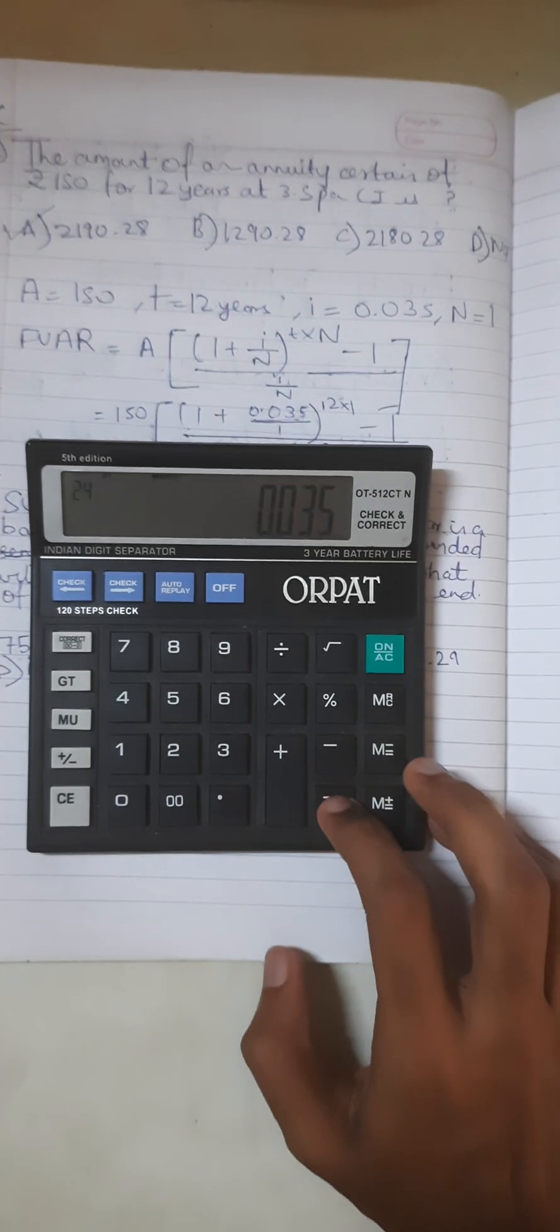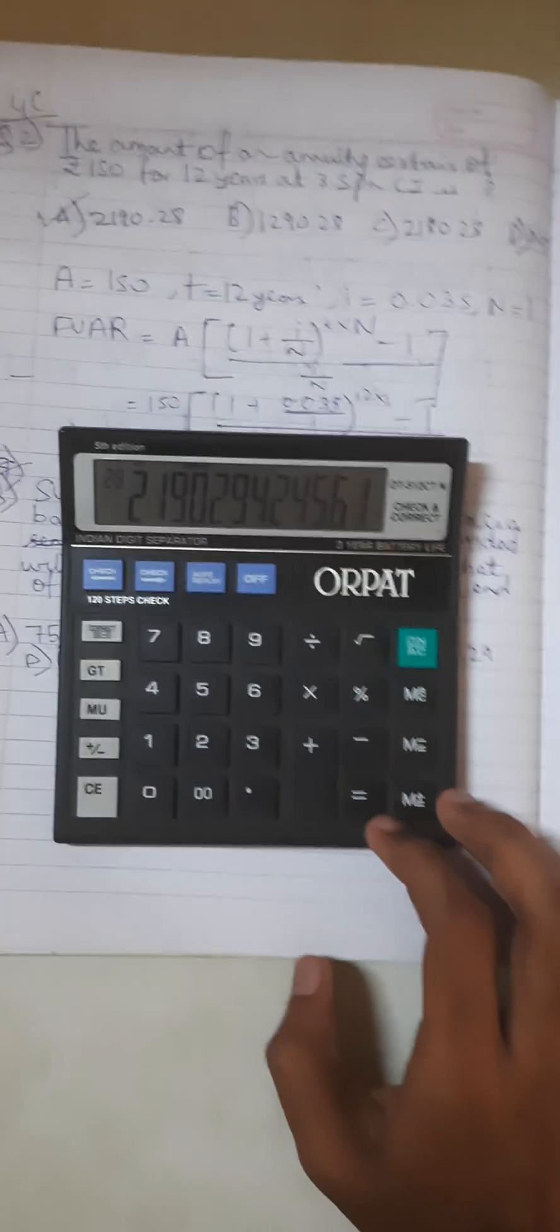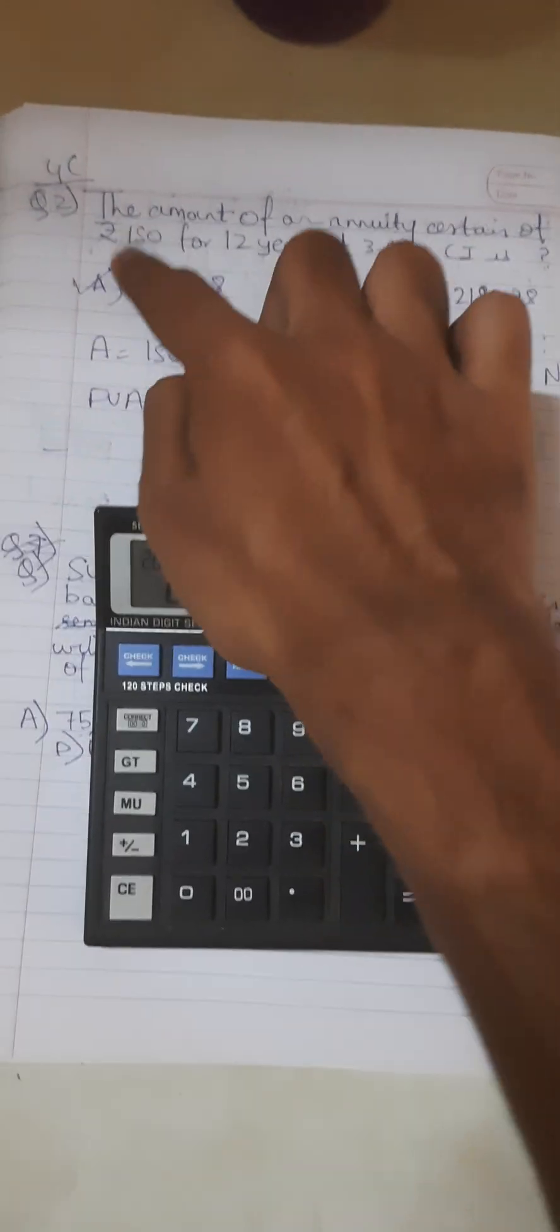MRC is equal to... into the payment of annuity, that is 2190.29. So it's option number 8.